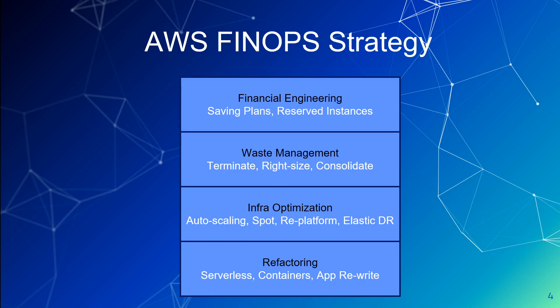Once you know that you are getting maximum discount from AWS, then move towards waste management. Get a list of everything running in your whole AWS fleet, and then review each and every instance and cloud resource — like EC2 instances, RDS instances, Lambdas, DynamoDBs — with your product owner or application SME. Then start deleting what is not needed. You'll be surprised how much clutter and waste you find, because there will be instances lurking from POCs, testing, learning, and so on. You can easily terminate those.